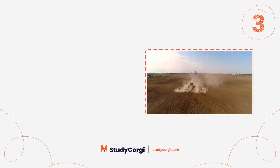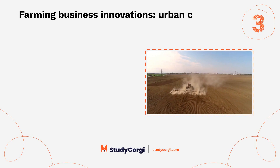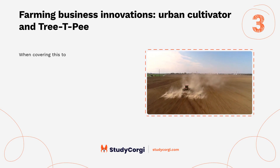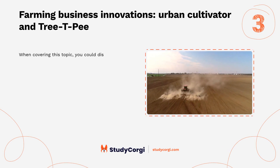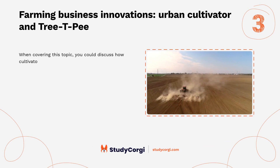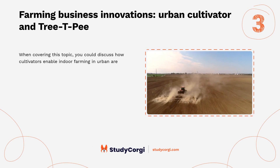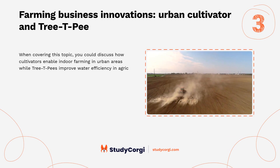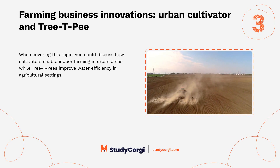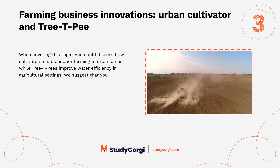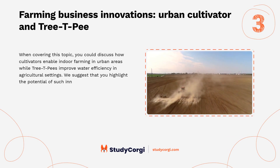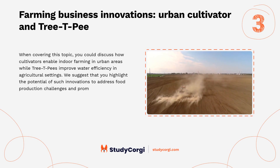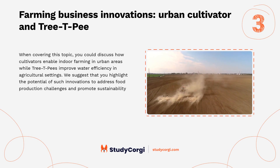Farming business innovations: Urban Cultivator and Tree TP. When covering this topic, you could discuss how cultivators enable indoor farming in urban areas, while Tree TP improves water efficiency in agricultural settings. Highlight the potential of such innovations to address food production challenges and promote sustainability in farming practices.